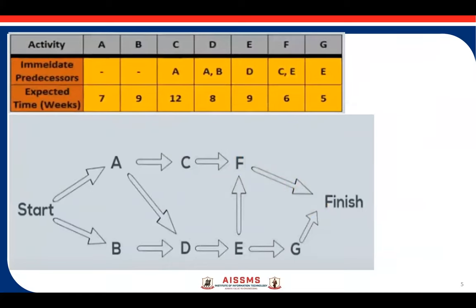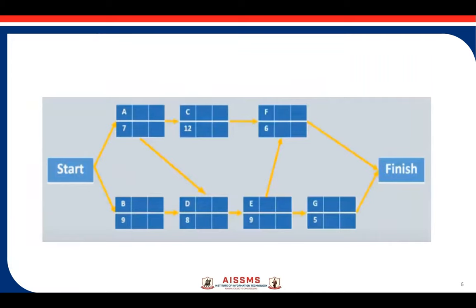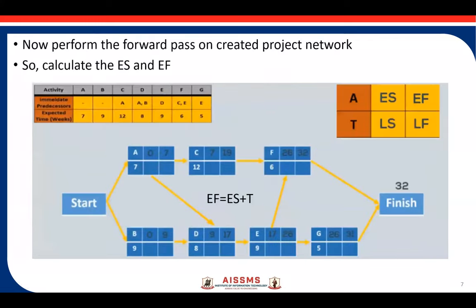The first step is to draw the network diagram. Based on this table, the network diagram is drawn here. We'll convert this network diagram using the node structure discussed in the previous slide. Here is the actual network diagram for the given example — you can see the start node and finish node, and each node has the activity name and duration. Now we need to carry out the forward pass to find out the ES and EF values.